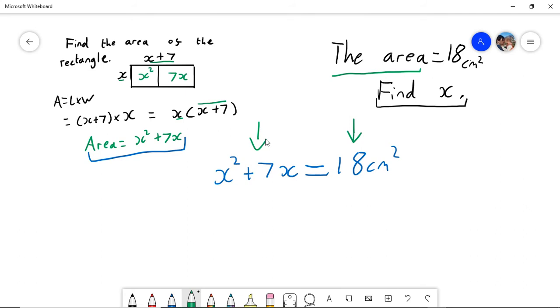If you wanted to work out what x is, what you're really saying is: what number, when you square it and then add 7 times that number, is equal to 18?